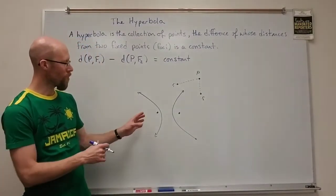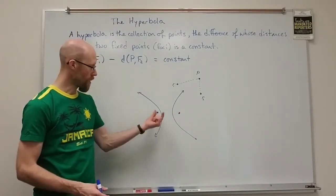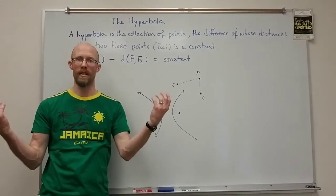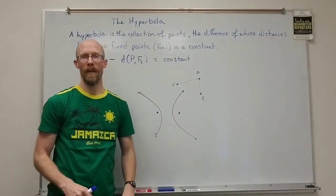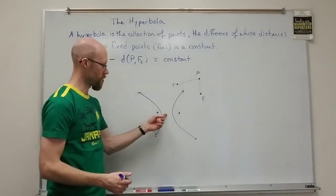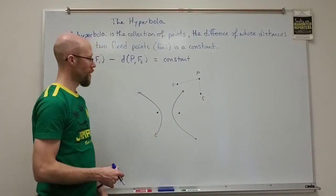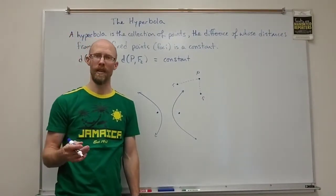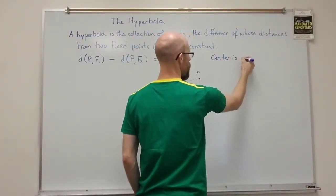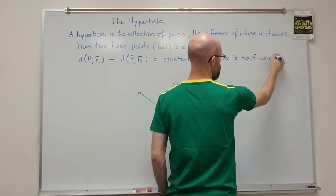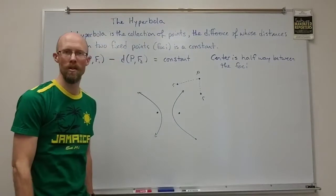What I want to mention is that if we orient the hyperbola so that the foci are on the x-axis and the two portions are opening horizontally, we can derive a formula using these distances by putting coordinates on the foci and on the center. Of course the center is going to be halfway between the foci, just like with the ellipse.